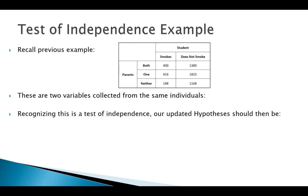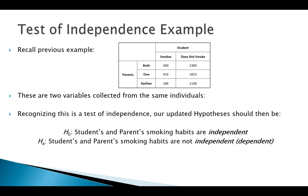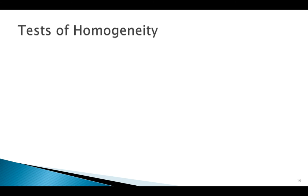Let's revisit an example about students, their smoking habits, and their parents' smoking habits. These are two variables collected from the same person — they asked the students: do you smoke, do your parents smoke? So if I recognize this as a test of independence, my null hypothesis would be that students' and parents' smoking habits are independent, and my alternative would be that they are dependent.